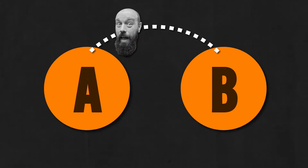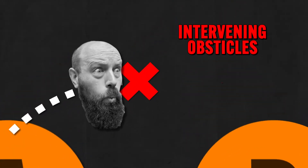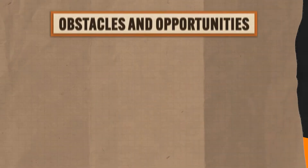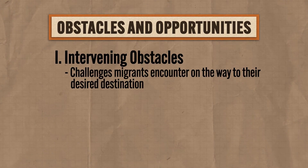Migration from point A to point B usually doesn't happen all at once, because migrants almost always encounter intervening obstacles and intervening opportunities. Intervening obstacles refer to challenges migrants encounter on their way to their desired destination. A good example is distance — the further away a migrant's destination, the harder it is to complete that migration. This is especially true for impoverished migrants, for whom long-distance travel is expensive.